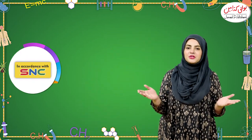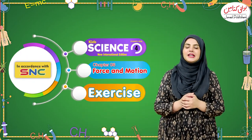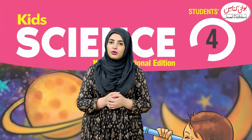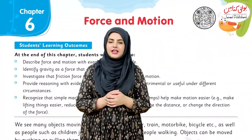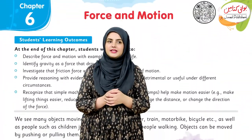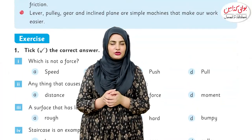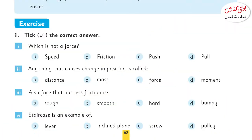Assalamualaikum, welcome to Javed Publishers. Today we are going to solve the key exercise for Science Grade 4, Unit number 6 — the name of the unit is Force and Motion. Let's go. Take out page number 63 and the first question of this exercise.